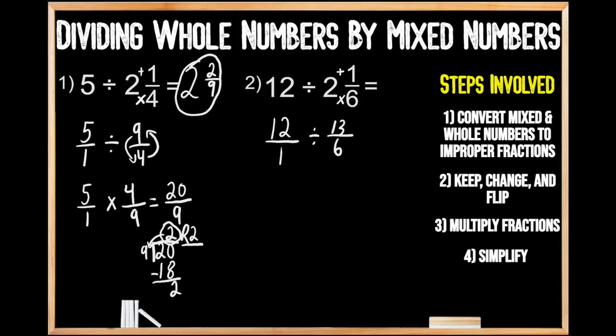Moving on to step number two, we work through the division steps to divide fractions. We keep our first fraction the same — 12 over one. Then we change the symbol to multiplication. And we flip our second fraction, so we now have a numerator of six and a denominator of 13. For step three, we multiply our numerators: 12 times six gives us 72. And multiplying our denominators, one times 13 gives us 13.